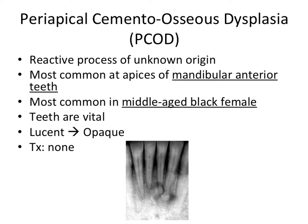Next we have another very commonly tested one: periapical cementoosseous dysplasia, or PCOD for short. This is a reactive process of unknown origin, and it's by far most common at the apices of mandibular anterior teeth, as seen in this image. It's also most common in middle-aged Black females, which is also a very commonly tested fact.